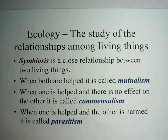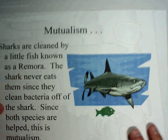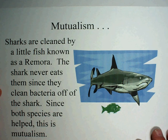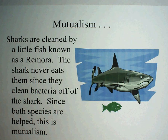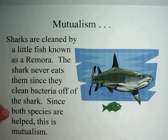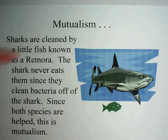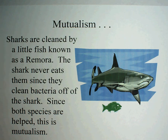Go ahead and get the definitions, and then I'm going to show you an example for each. The first type of symbiosis is called mutualism — where both individuals are helped. Here's an example: sharks are cleaned by little fish known as a remora. The shark never eats them since they clean off bacteria from the shark. Since both species are helped, this is called mutualism. Mutually, they are both benefited. Make sure you write this example down so you know the difference.